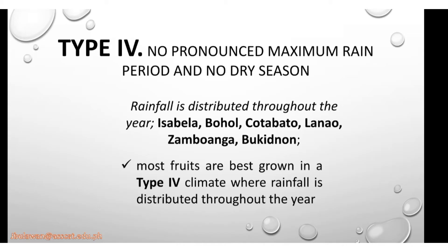For Type 4, there is no pronounced maximum rain period and no dry season — rainfall is distributed throughout the year. The places are Isabela, Bohol, Cotabato, Lanao, Zamboanga, and Bukidnon. Most fruits are best grown in these Type 4 places, as they are good for production of different crops because of the climate.